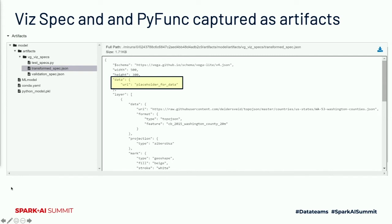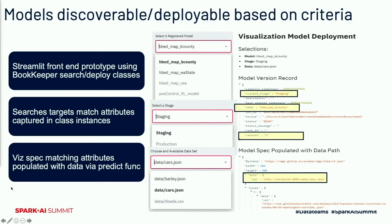Just like you have a model that takes data in and predicts some value, we have a visual communication as a model that takes in some data, and when you call predict on it, puts out a visual. This allows us to use our toolkit — that we and others have developed in the data science space — and apply that to these communications.